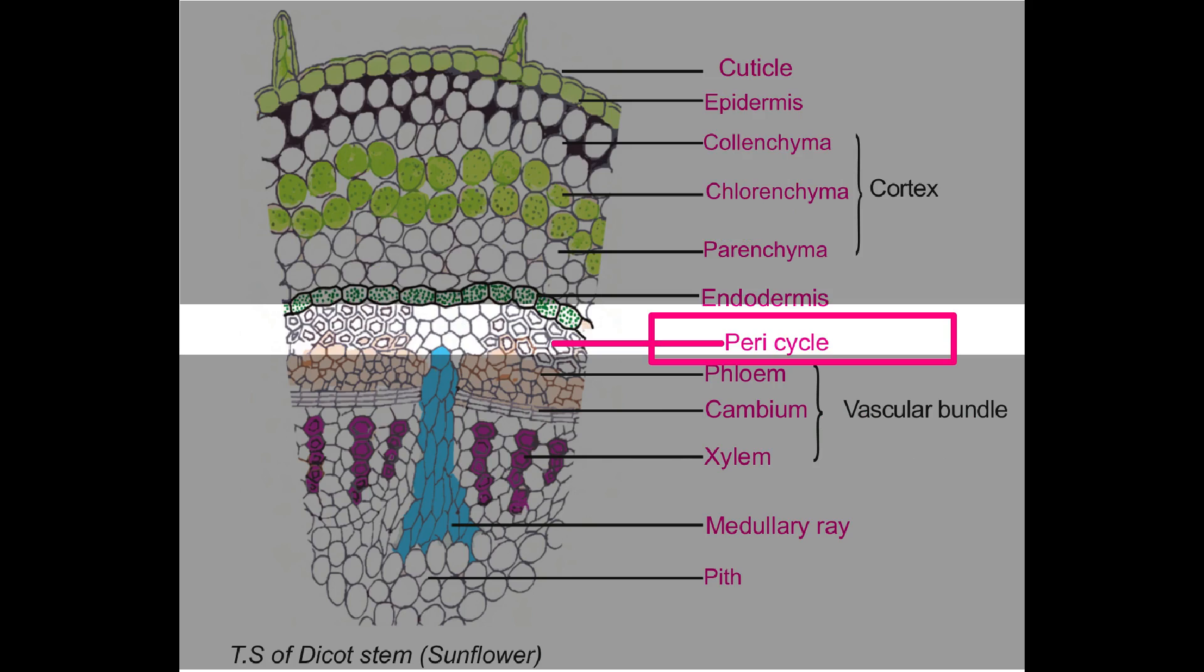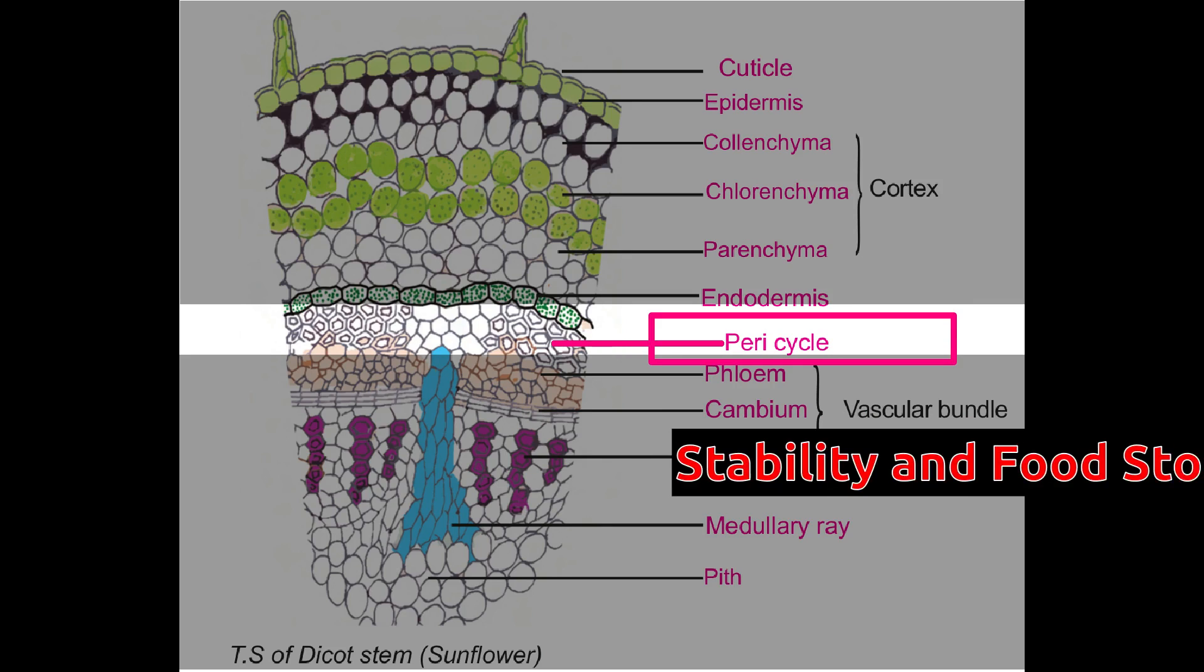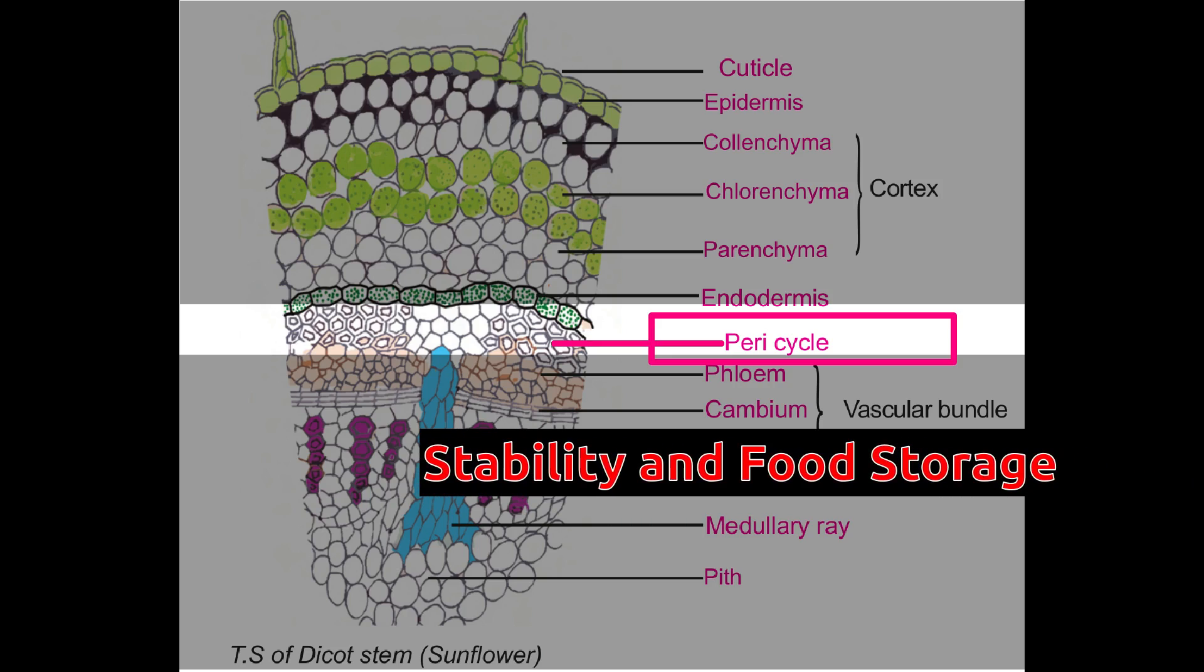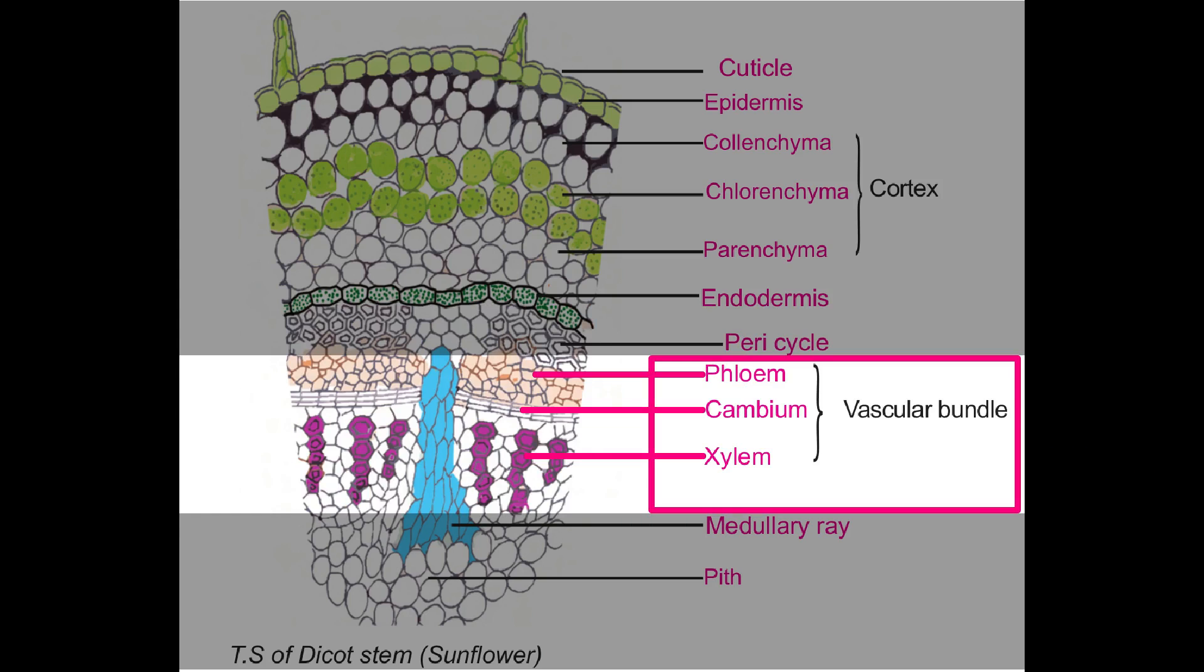Pericycle is made of either parenchyma or sclerenchyma cells. It provides stability and acts as food storage. After pericycle, vascular bundle is located. Vascular bundle is composed of three elements.